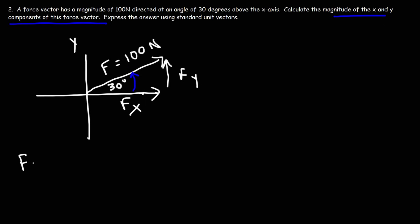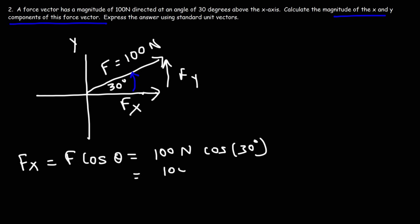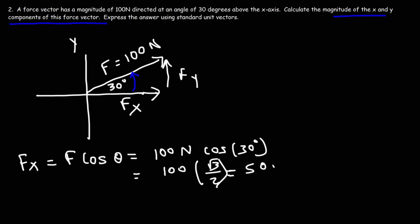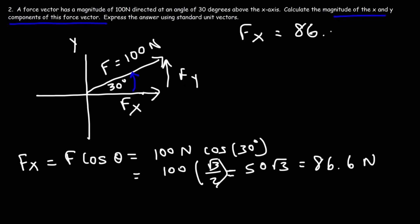Fx = F·cos(θ) = 100·cos(30°). Cosine of 30 degrees equals √3/2. So we have 100 × (√3/2) = 50√3, which equals approximately 86.6 newtons. So Fx = 86.6 newtons.